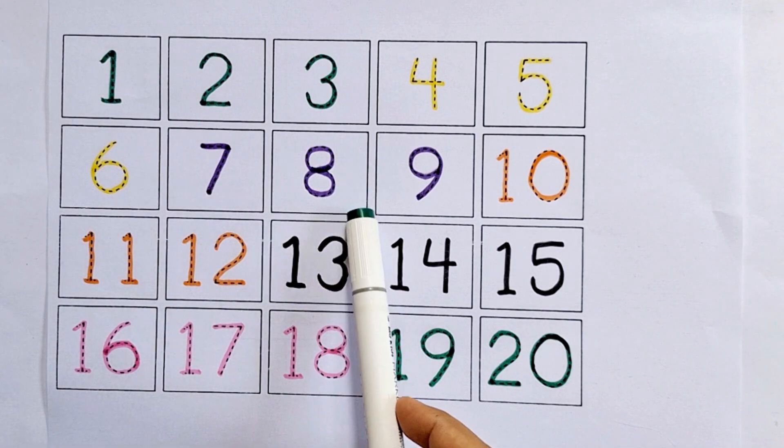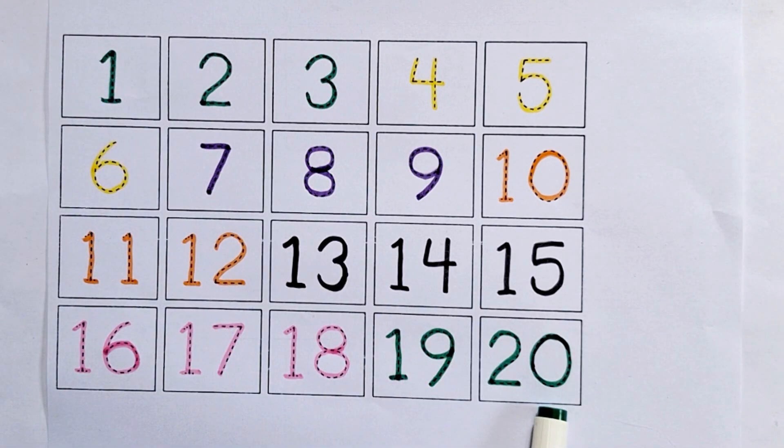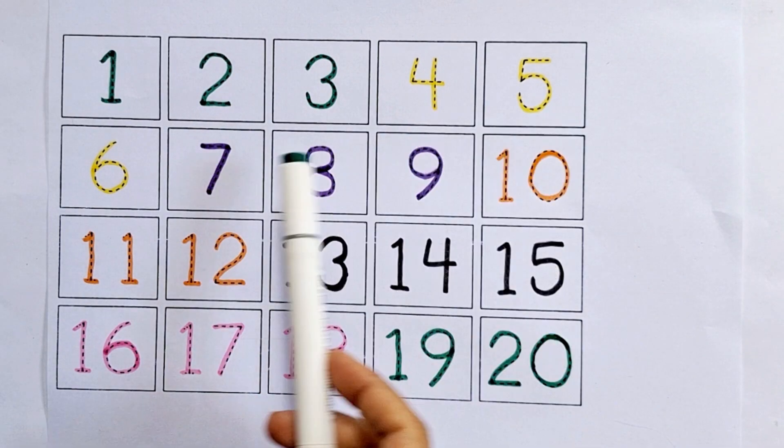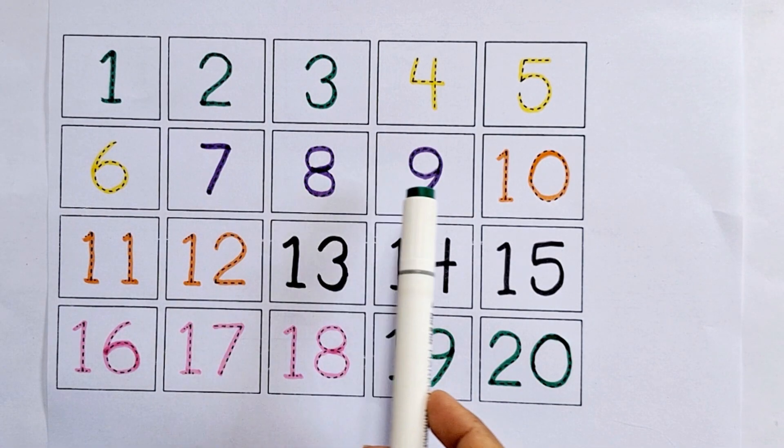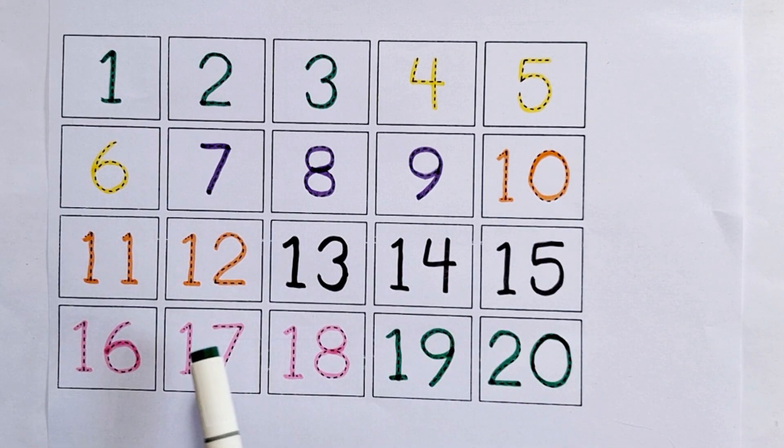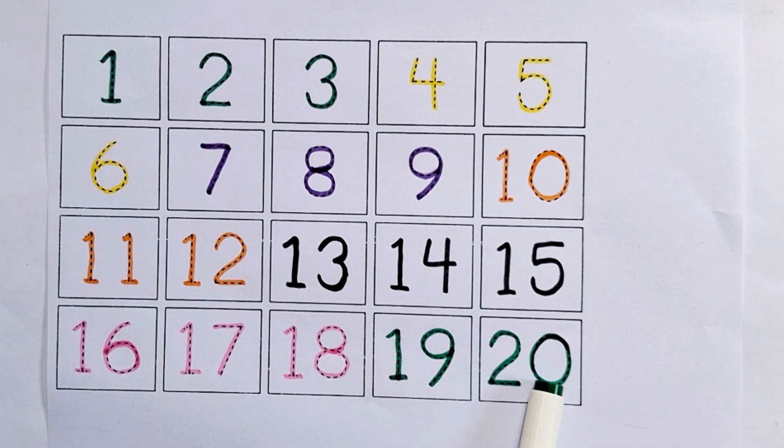Let's again learn counting from 1 to 20. One, two, three, four, five, six, seven, eight, nine, ten, eleven, twelve, thirteen, fourteen, fifteen, sixteen, seventeen, eighteen, nineteen, twenty.